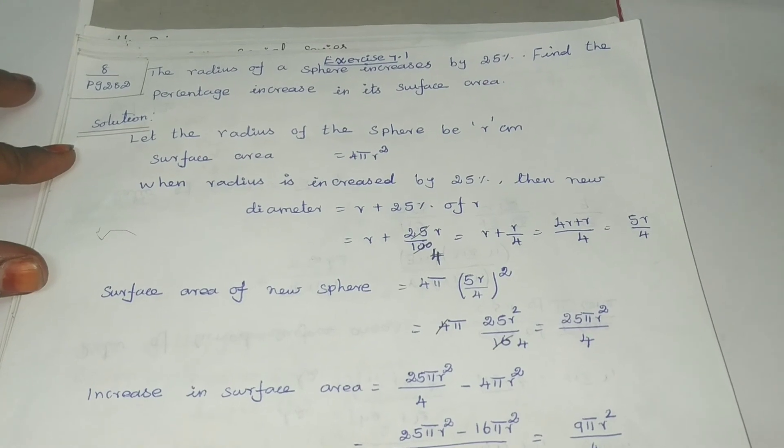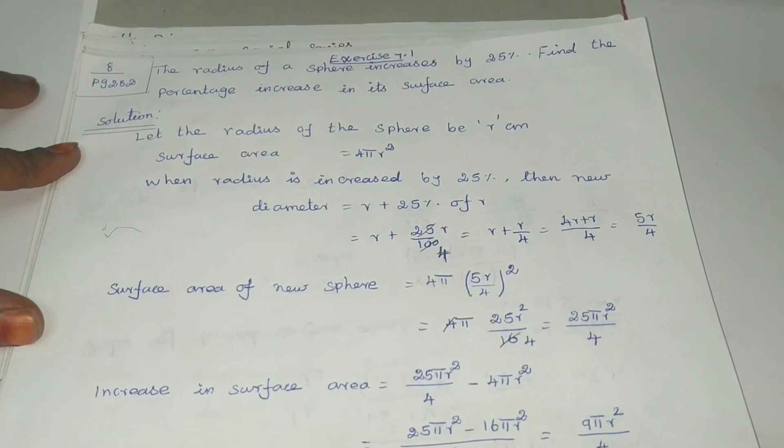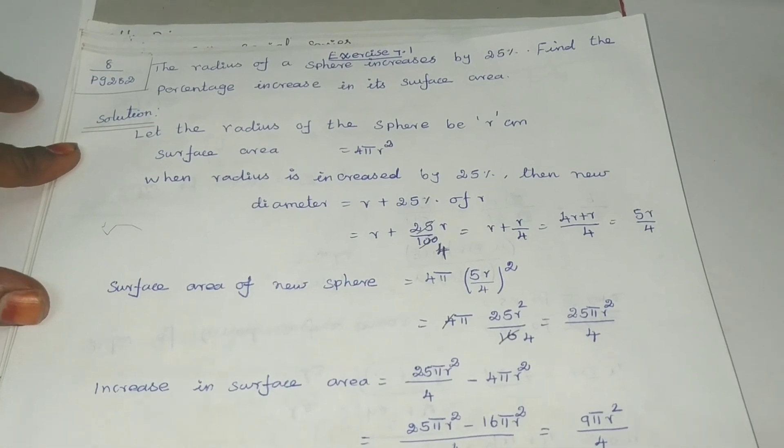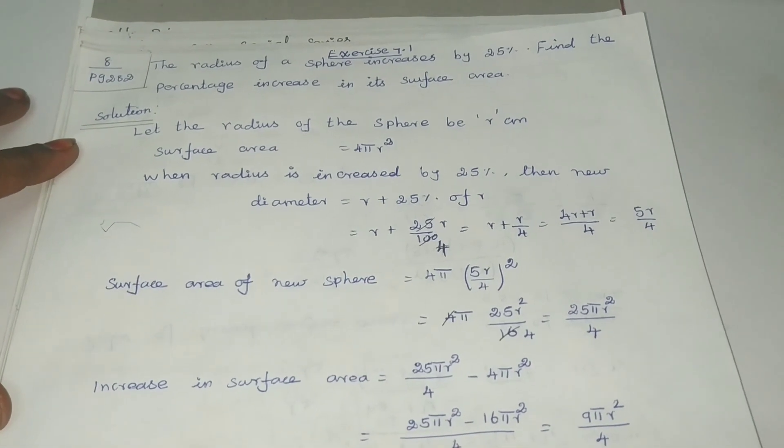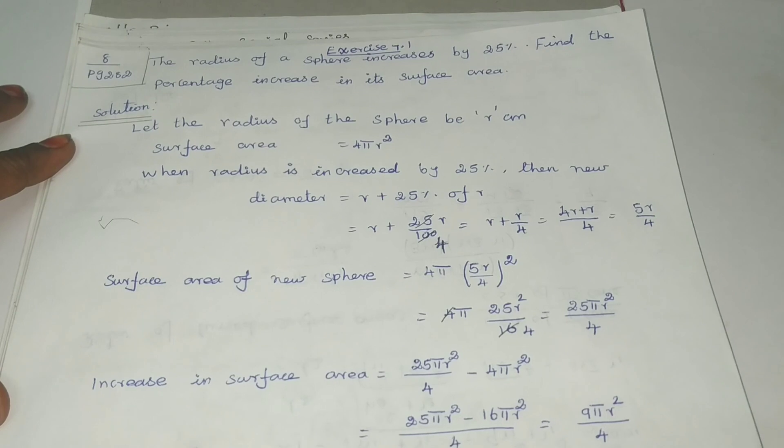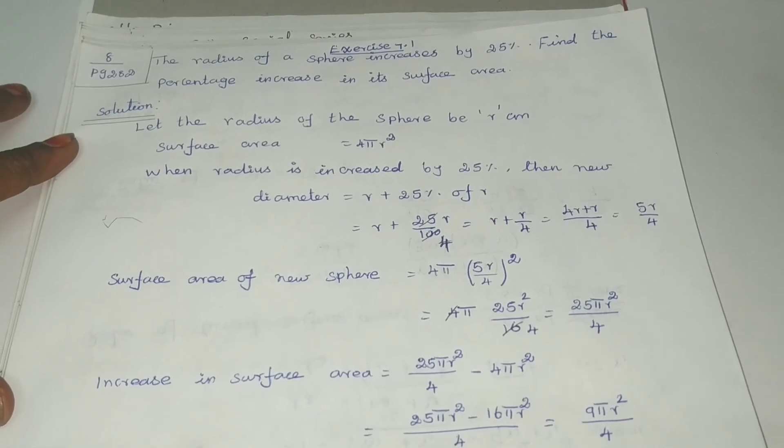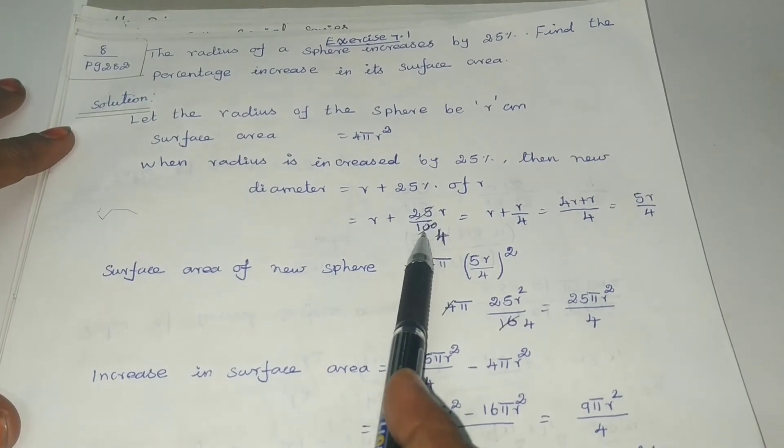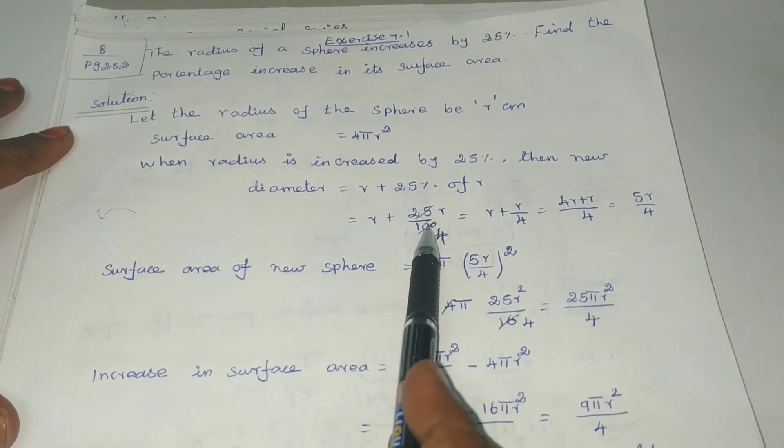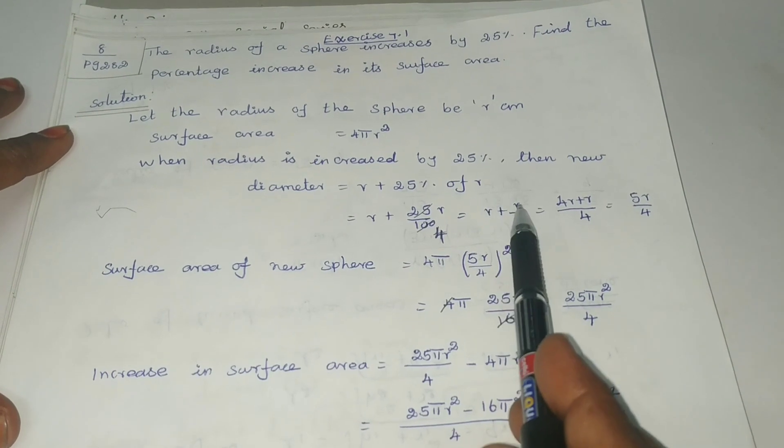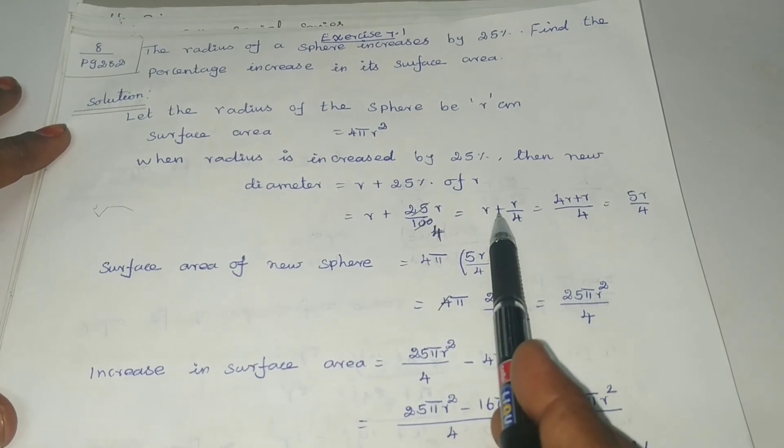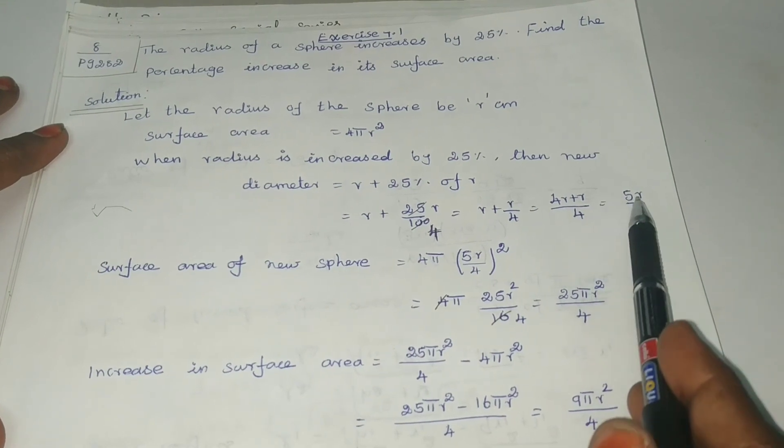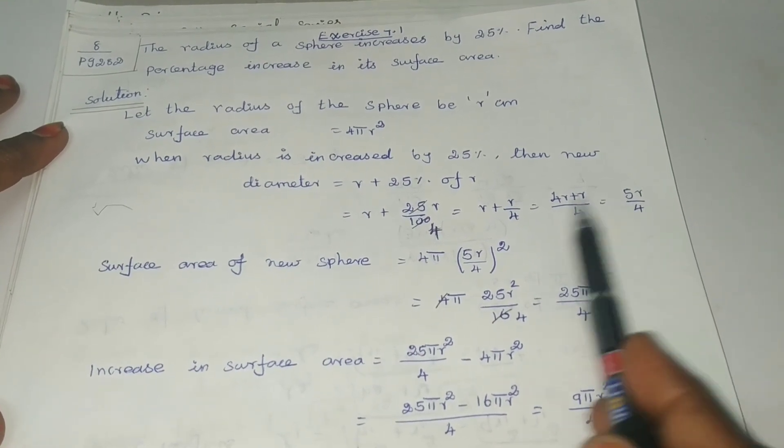Sphere 1 surface area formula is 4πR². When radius is increased by 25%, the new diameter is equal to R plus 25% of R, which is R plus 25R/100. Simplifying: R plus R/4, which equals 4R plus R divided by 4. This is 5R/4. This is the new radius.